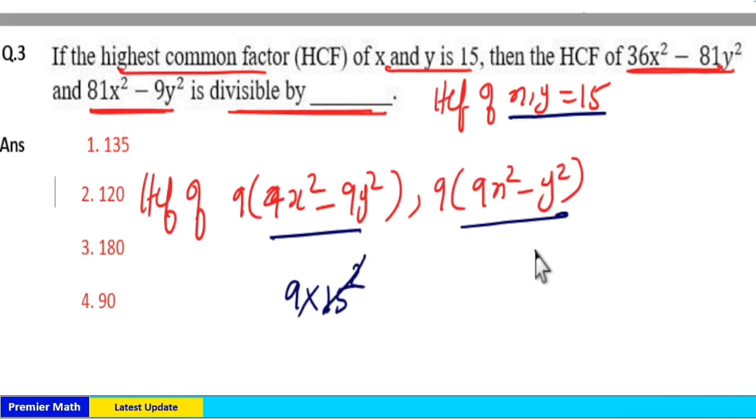This is wrong because for the value of x = 30 and y = 15, 4x² - 9y² is not divisible by 15². Just because of x² and y², you can't take 15².